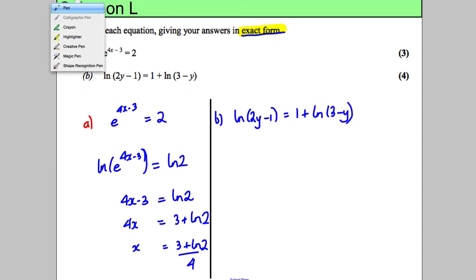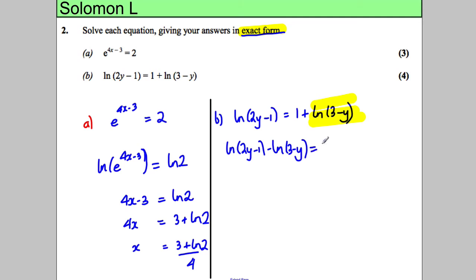So I get ln of 2y subtract 1 take away ln of 3 subtract y is equal to 1. Now I know that my log rules: ln a subtract ln b is ln a divided by b. So therefore I can write that ln of 2y subtract 1 over 3 subtract y must be equal to 1.